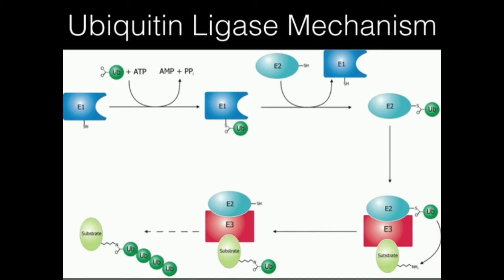But the reason that we have to use the ATP is we're going from a carboxyl to an amide. Ultimately, that's the net reaction. And then we're going to take that damaged protein and polymerize ubiquitin onto it. And that's called polyubiquitination.